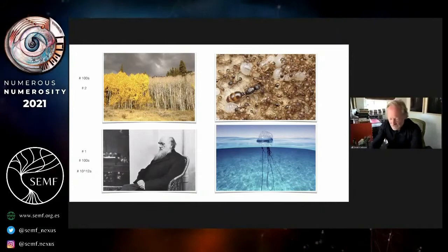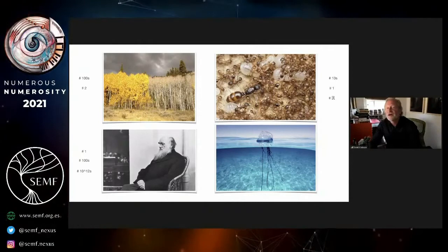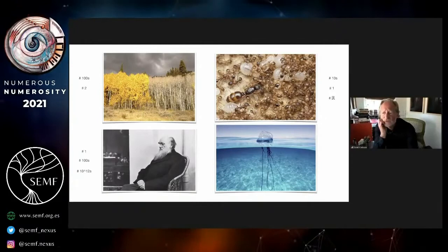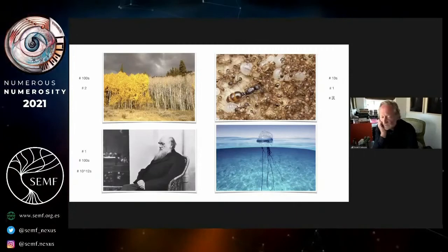The Darwinian one's kind of interesting. That could be one, hundreds, or actually trillions, and I'll explain that one. On the ants, this would be on the order of tens, hundreds, or some fractional number, some real number that would be very difficult to calculate, and I'll explain why.